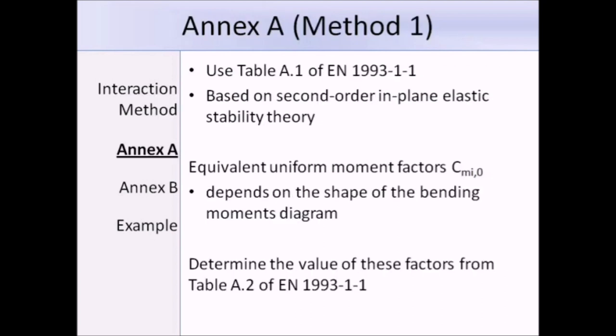For the first method, we're using Annex A, so we need to refer to table A.1 of EN 1993 part 1-1 specifically, and this method is based on second order in-plane elastic stability theory. We need to determine equivalent uniform moment factors CMI0, which depend on the shape of the applied bending moment from table A.2. We're going to refer to these two tables, A.1 and A.2, to help us work out the values of these interaction factors.